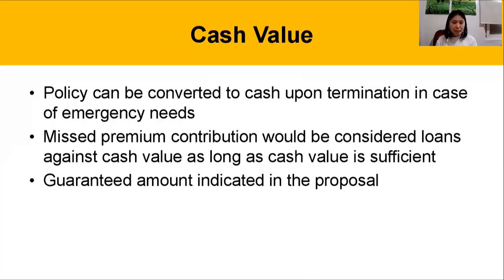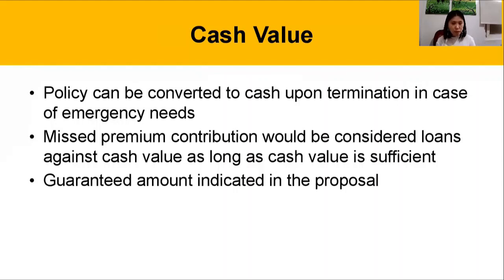This is usually ideal when you have an emergency need or when you need a larger bulk of money. Another purpose of the cash value is it determines how much loan you can get against the policy. Let's say your cash value is ₱100,000 and you have a premium of ₱1,000 — if you miss that premium, we can still loan that ₱1,000 missing premium against the cash value because there is enough cash value to handle it. This provides a safety net just in case times are rough and it's hard to contribute.